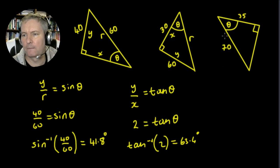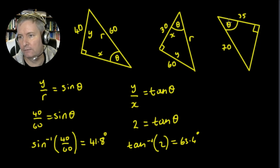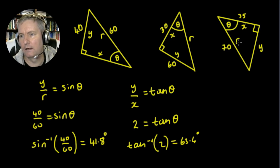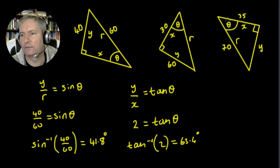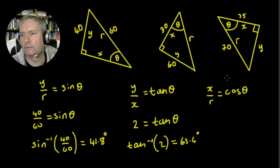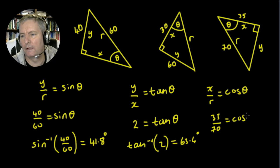Finally, we've got this angle theta. The opposite is the side opposite this angle, so we can call that y. That means this is the adjacent, so we can call that x, and we can call this length r. We're going to use the adjacent over the hypotenuse: x upon r equals the cos of theta. So x upon r is 35 over 70, and that equals the cos of theta.